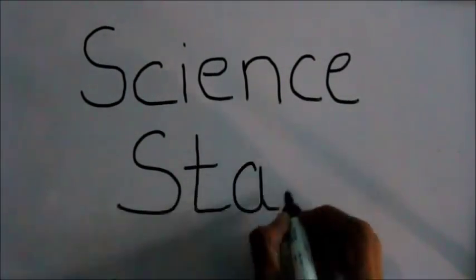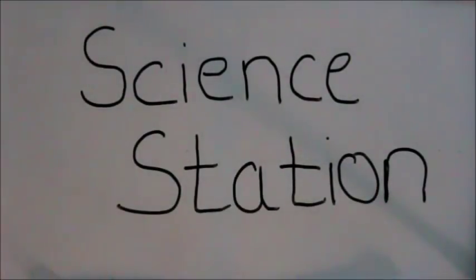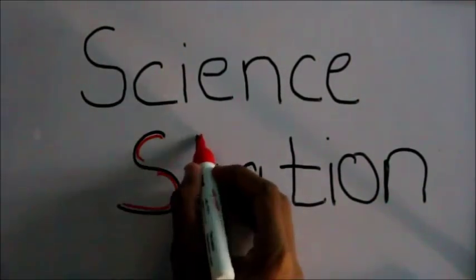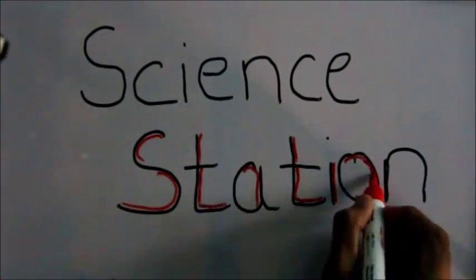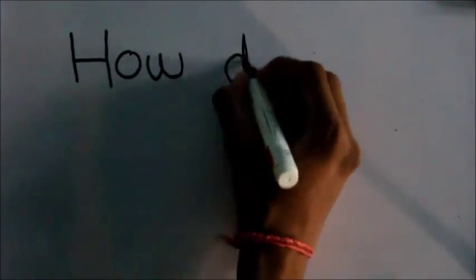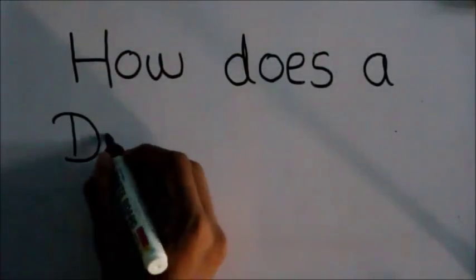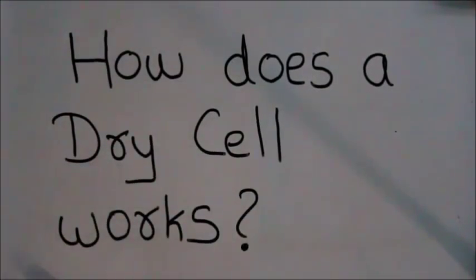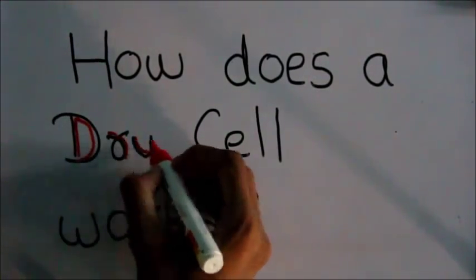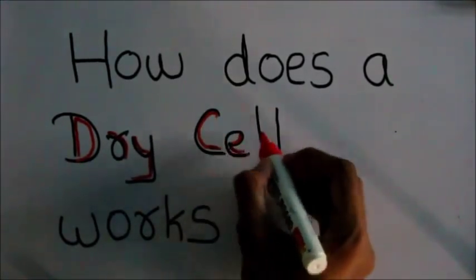Hey guys, welcome to another video on Science Station. This is my second video on this channel. In this video, I will be telling you how a dry cell works. The first dry cell was invented in the 1880s by a German scientist called Karl Gassner, and nowadays it is very useful because it is used in various devices such as flashlights.